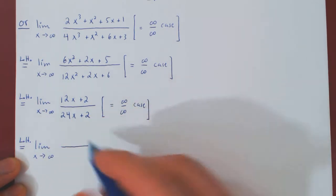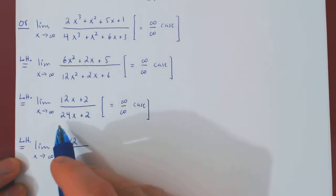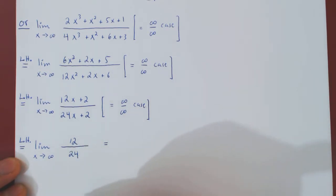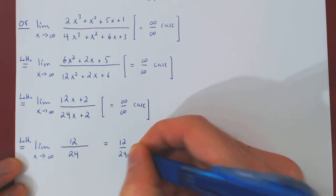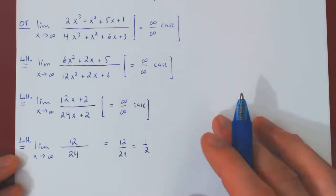Well, the derivative of the numerator is simply 12 over the derivative of the denominator, which is 24, and now the limit is trivial. So 12 over 24 is a constant, and of course this is 1 half, as we had found previously.